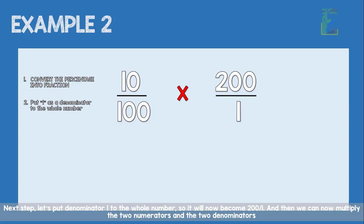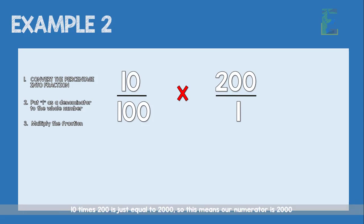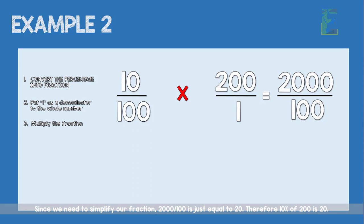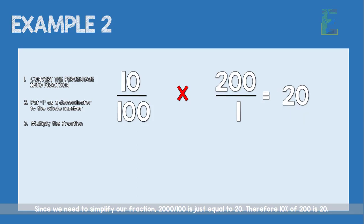Next, let's put denominator 1 under the whole number, so it will become 200 over 1. Now we multiply the two numerators and the two denominators. 10 times 200 equals 2,000, so our numerator is 2,000. 100 times 1 equals 100, so our answer is 2,000 over 100. Since we need to simplify, 2,000 over 100 equals 20. Therefore, 10% of 200 is 20.